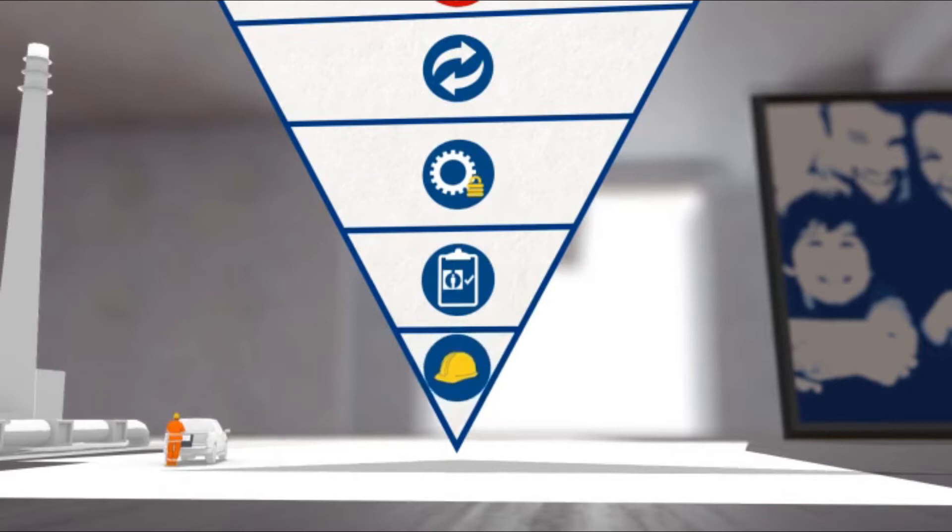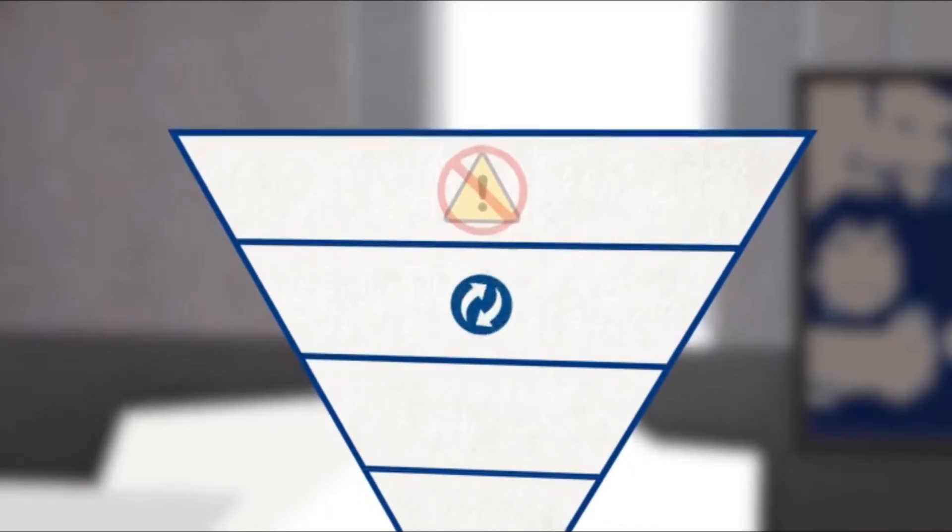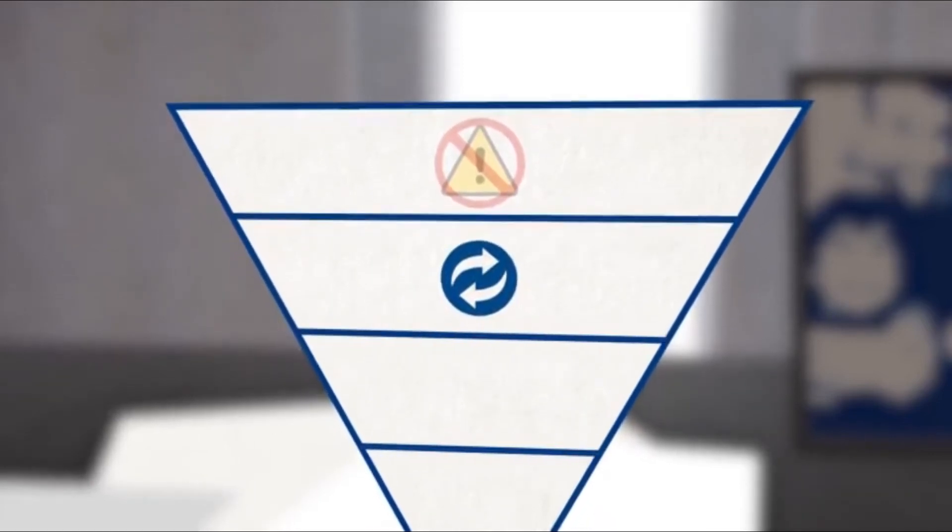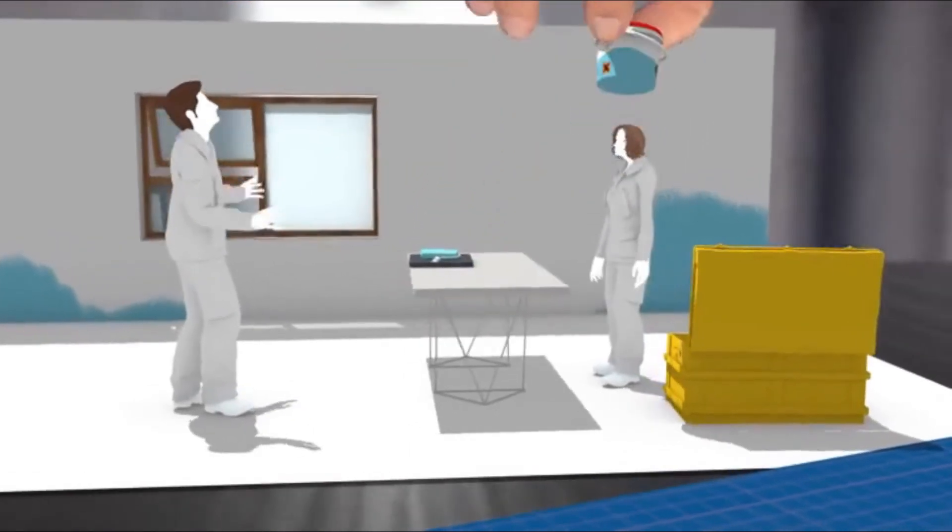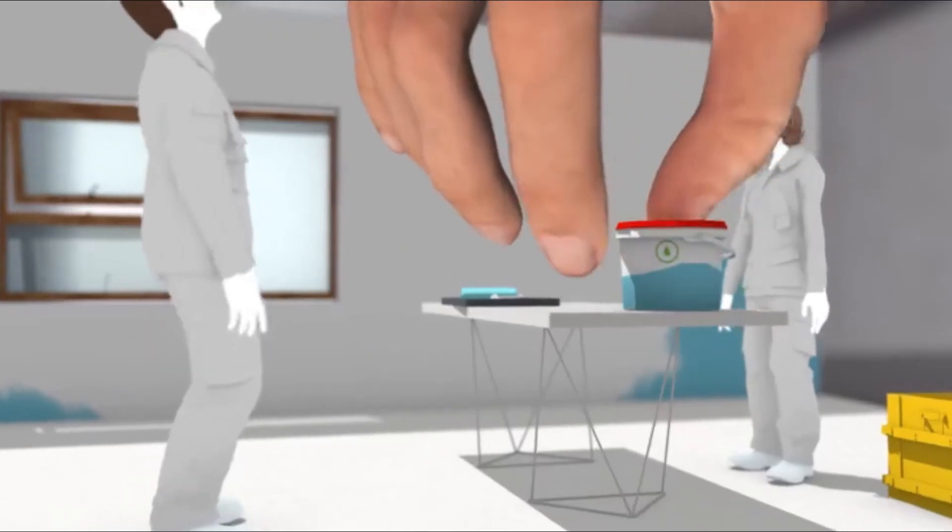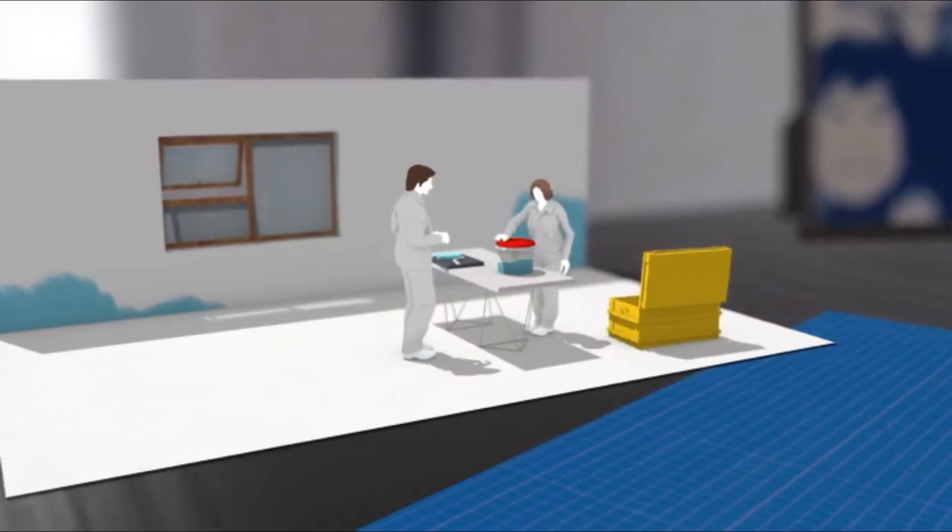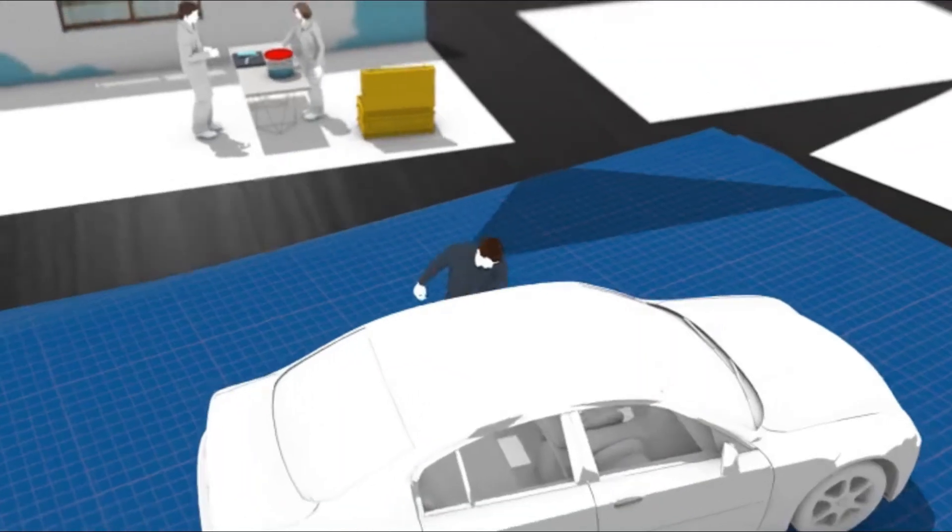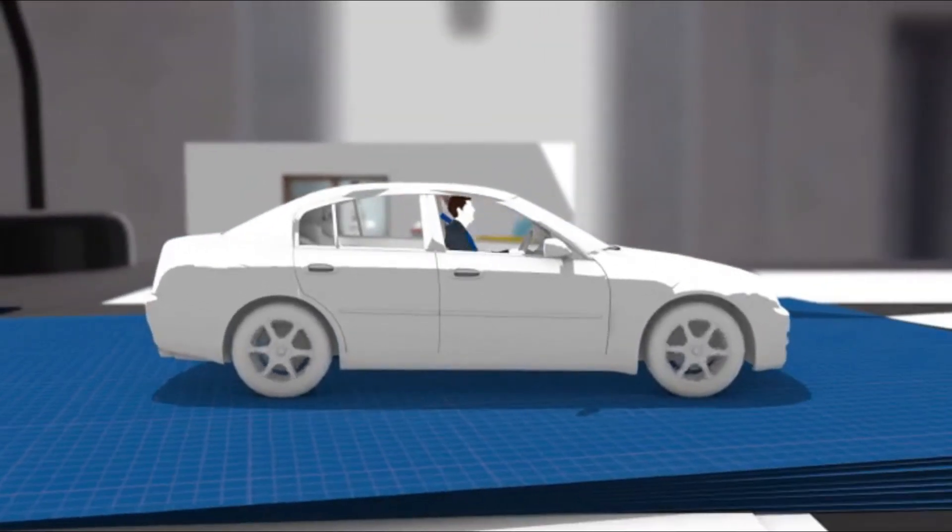If you can't remove the hazard, can you lower the risk by substitution? Replace solvent-based paints, which can be hazardous to the environment and people's health, with ones that are water-based. Another example is to substitute the hazard of traveling by road with traveling by train instead.